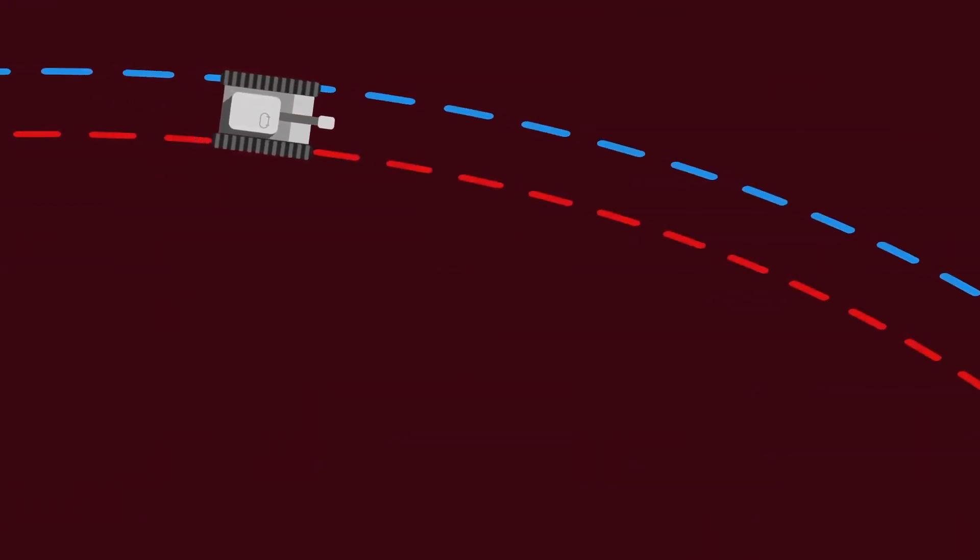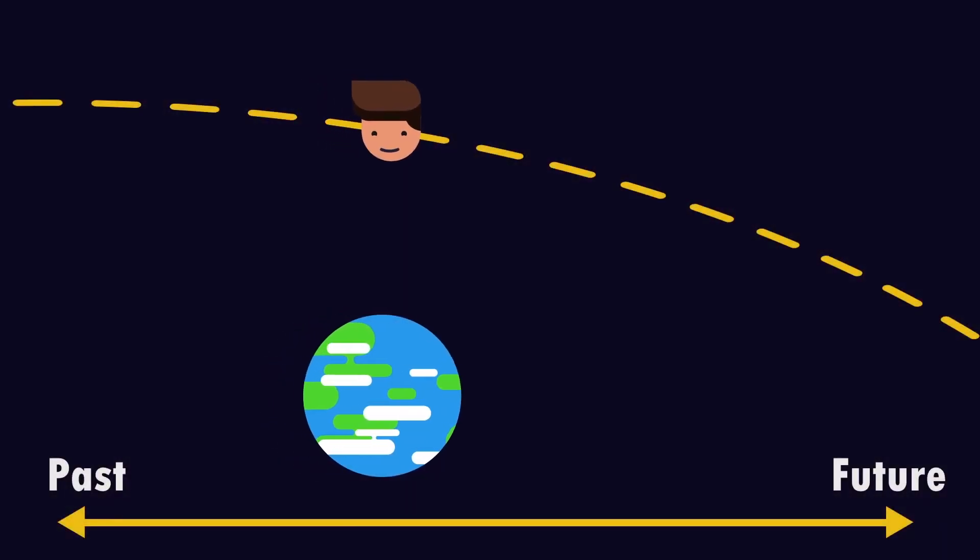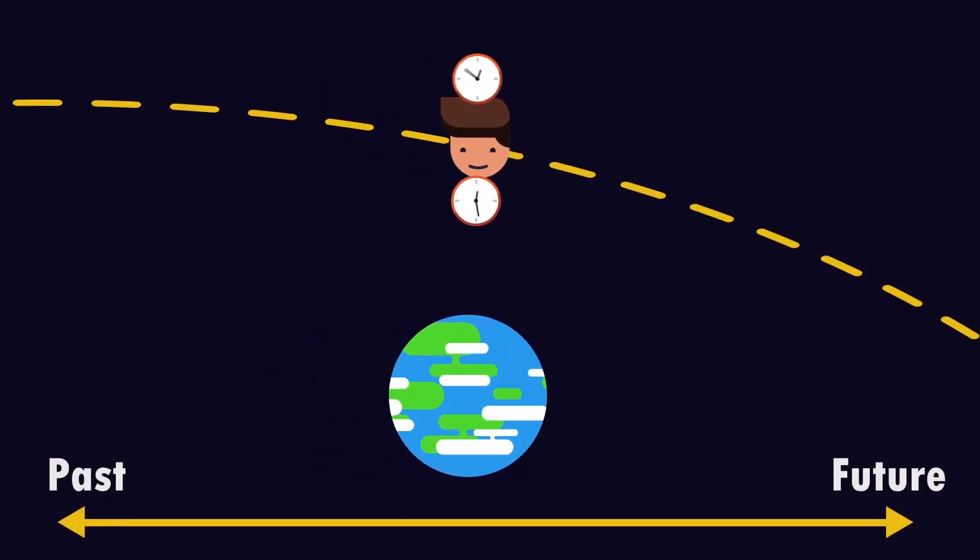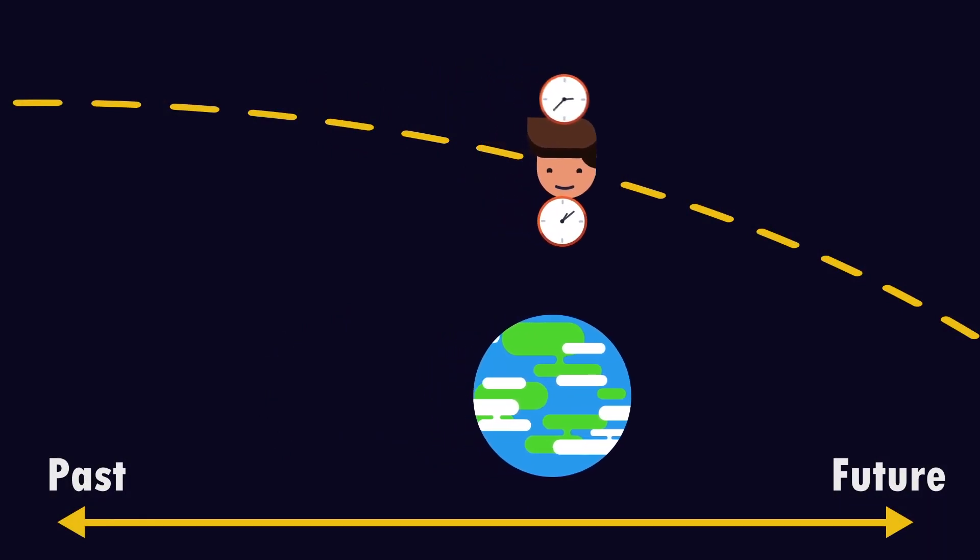And so, just like how a tank turns by having its inside track move slower than the outside one, we will start to turn towards the Earth as time passes at different speeds for each part of our body.